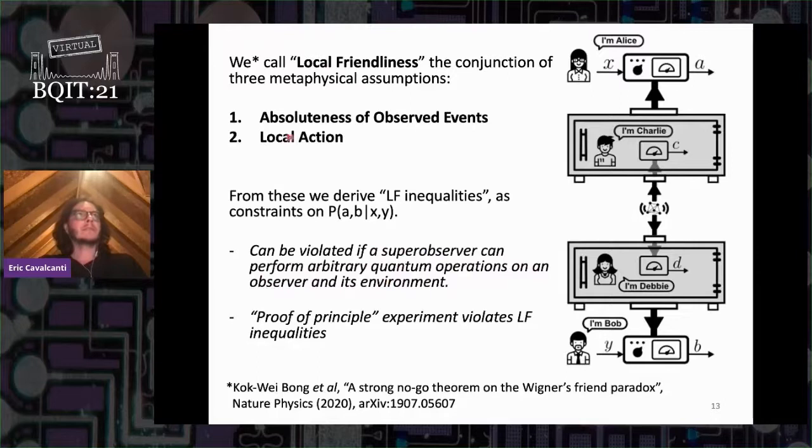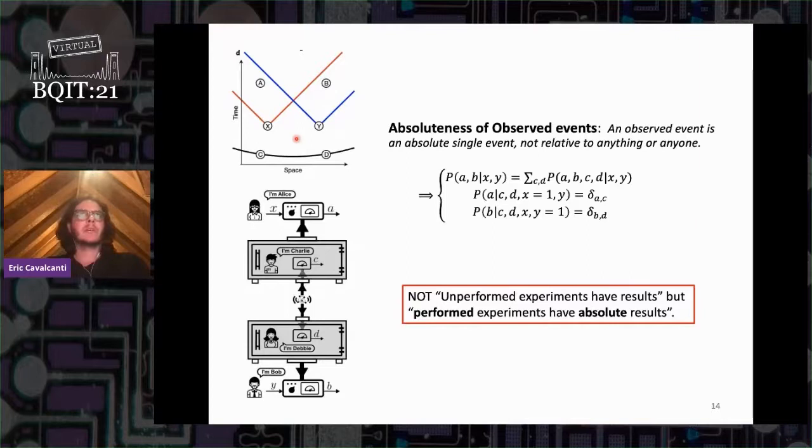What are these assumptions exactly? Absoluteness of observed events is the assumption that an observed event is an absolute single event, not relative to anything or anyone. In particular, it implies that in each run of the experiment, the variables C and D, which are observed by Charlie and Debbie, have some well-defined absolute value that is not dependent on the observer. There's a joint probability distribution for A, B, C, D conditional on the choices of setting.